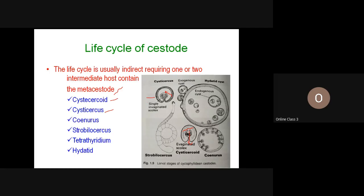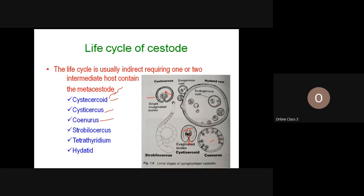The next metacestode is coenurus. Coenurus is very similar to cysticercus except that it is a fluid-filled bladder containing multiple invaginated scolices. This is the metacestode of Taenia multiceps.